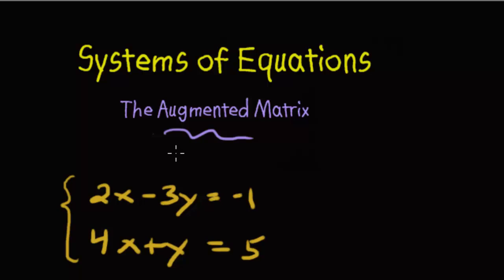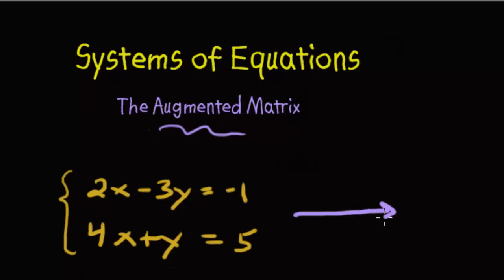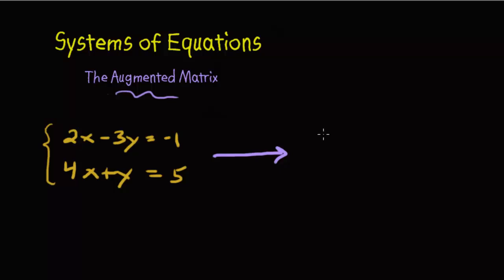We're going to draw a line over here. And we're going to set it up into a matrix. Now, a matrix starts off with having a left bracket. Now, right now, all I'm going to do is I'm going to rewrite the equation 2x minus 3y equals negative 1.